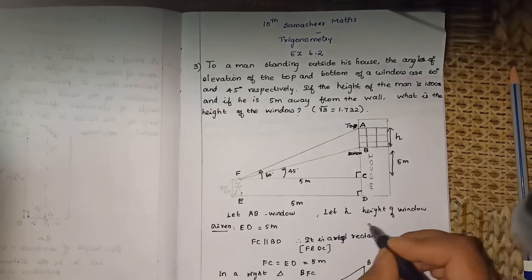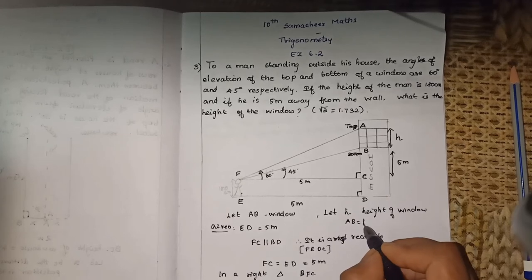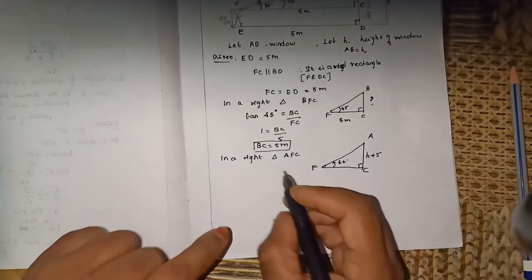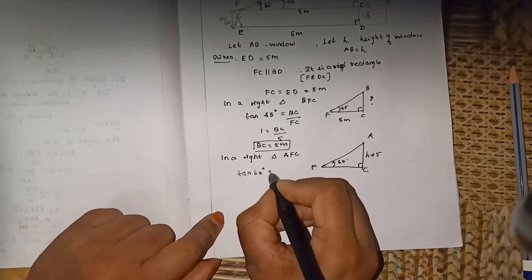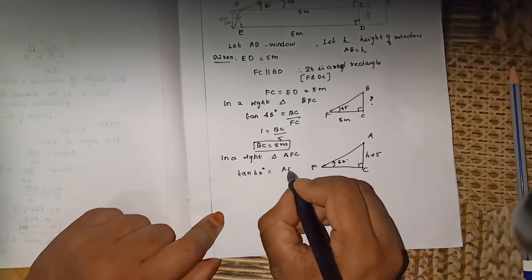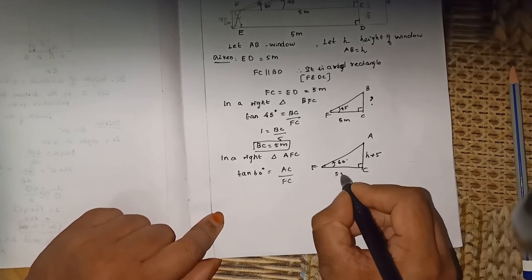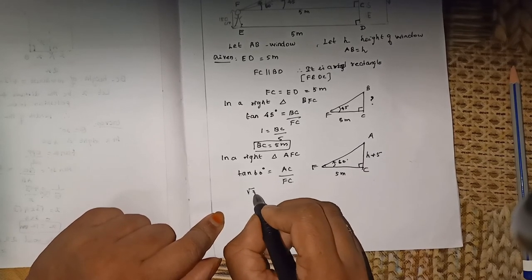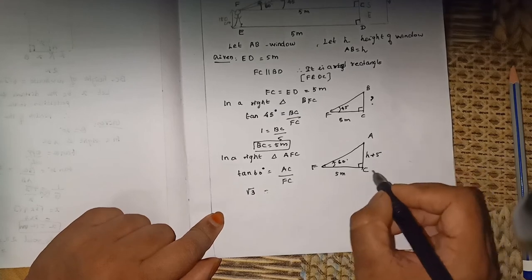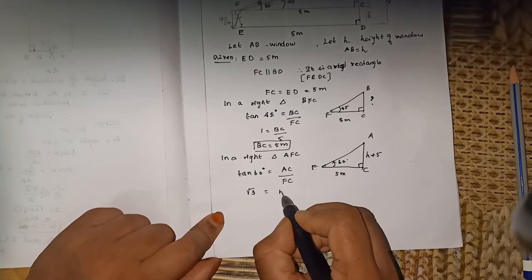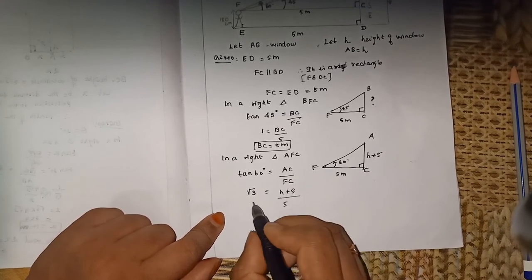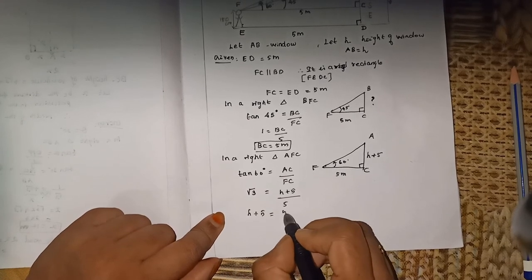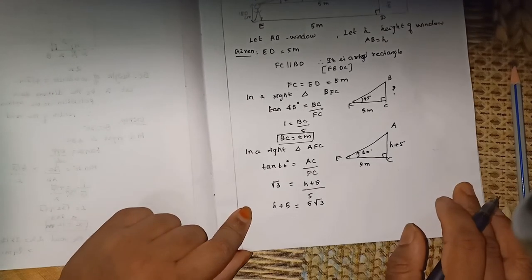Tan 60 degrees is equal to AC by FC. FC is 5 meters. Tan 60 value is root 3. Root 3 equals H plus 5 by 5. Cross multiply: H plus 5 is equal to 5 root 3.